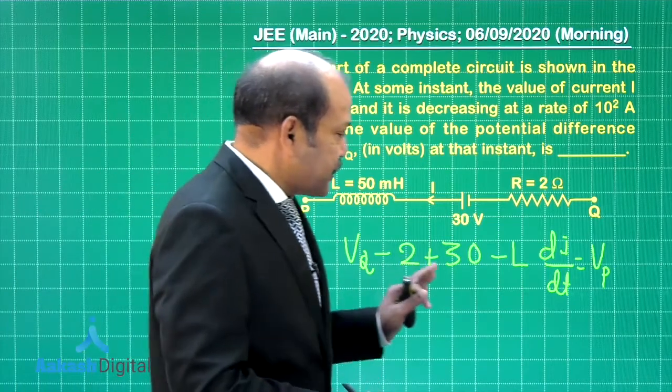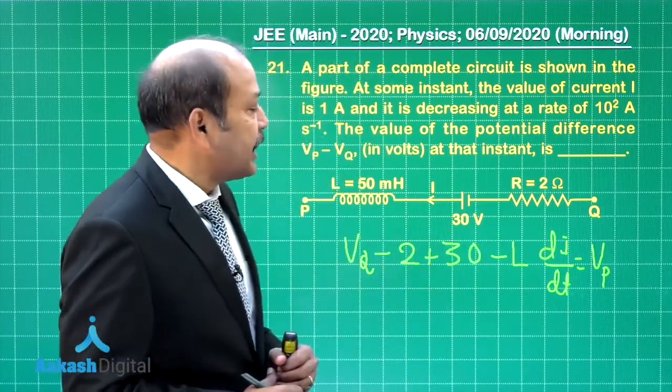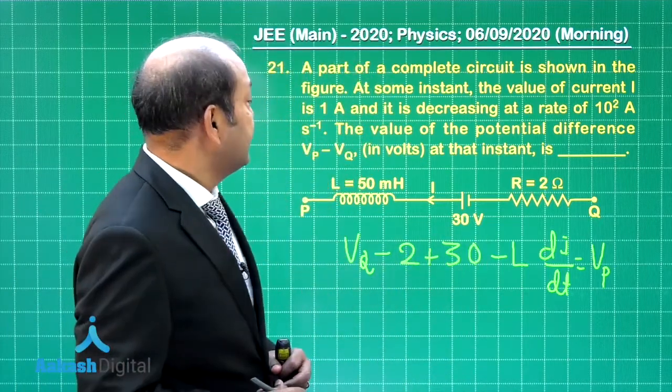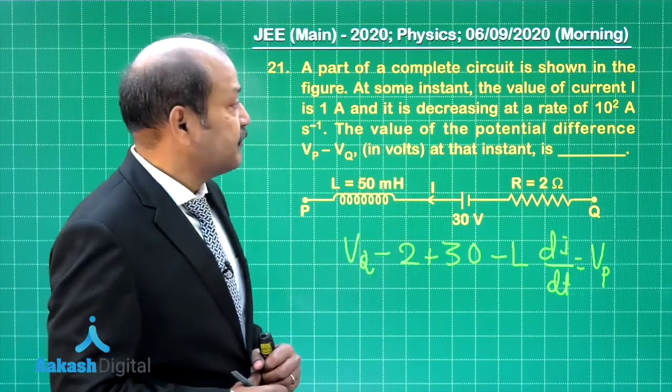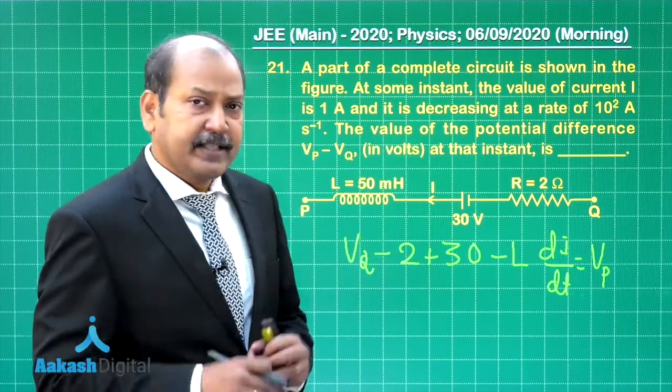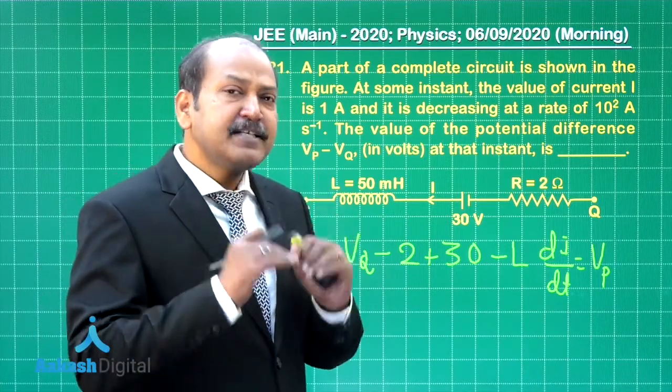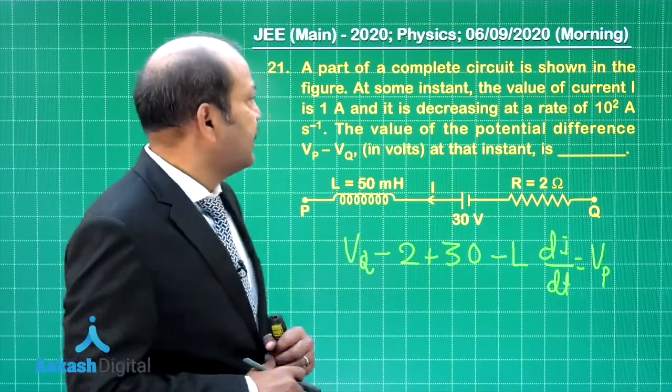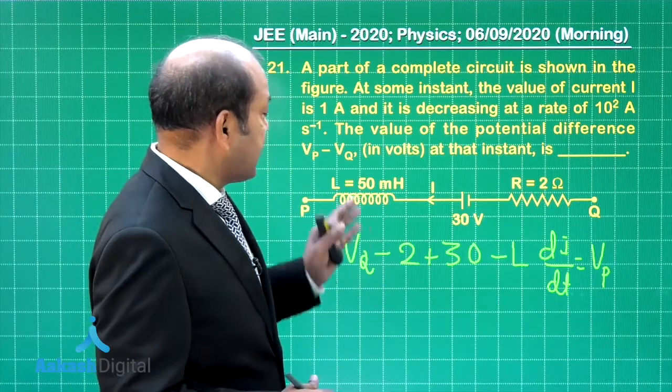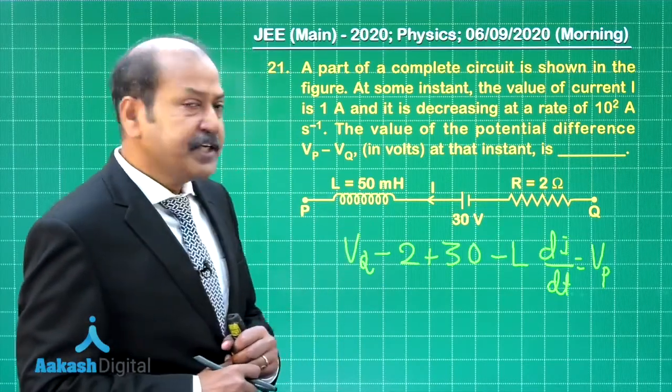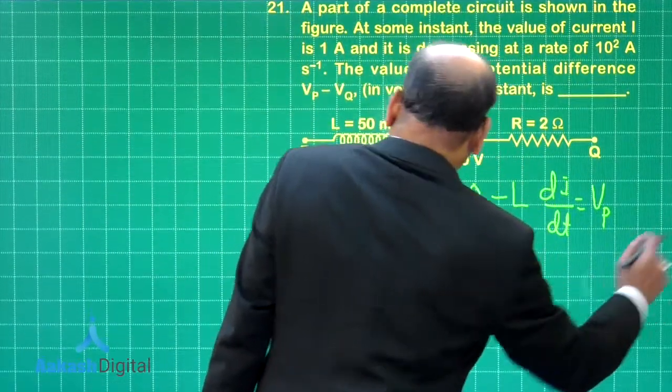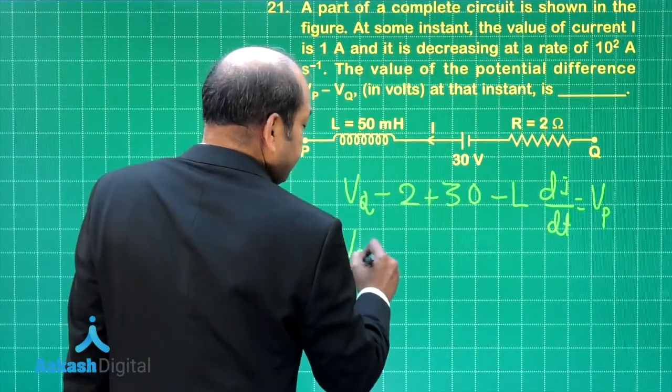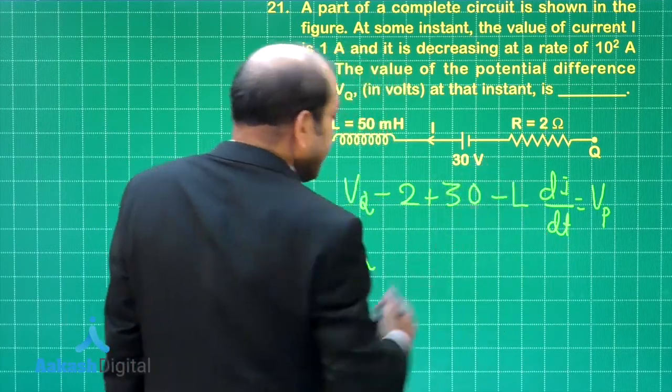Well we have put all the values. What is the value of di by dt? The question says that the current is decreasing at the rate of 100 ampere per second. That means di by dt is minus 100 ampere per second. The value of l in fact is given as 50 millihenry. So now the question is practically solved. Let us put the value of di by dt and l also.